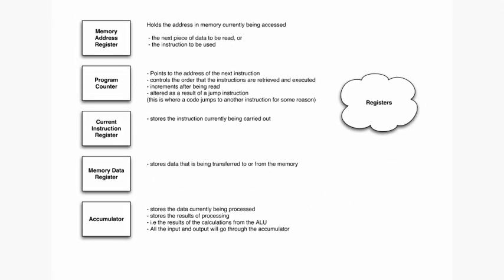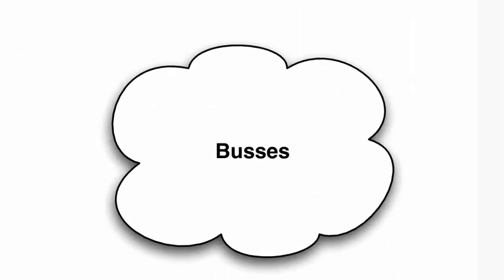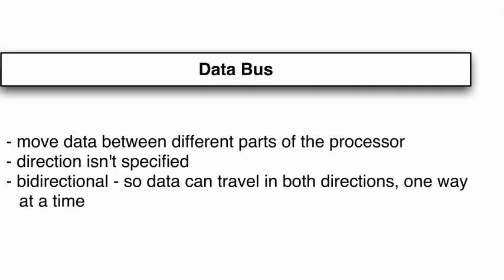Those are the five registers you need to know, and you might be able to tie them in with what we've looked at previously. The definitions are all you need to know — you don't need to understand how they link together. Now we're going to look at buses. So, what is a bus? A bus is a way of transferring data.